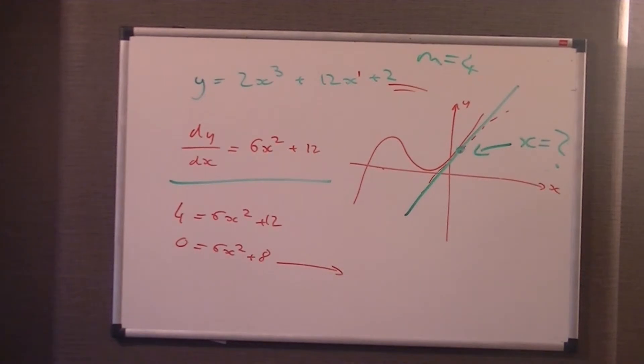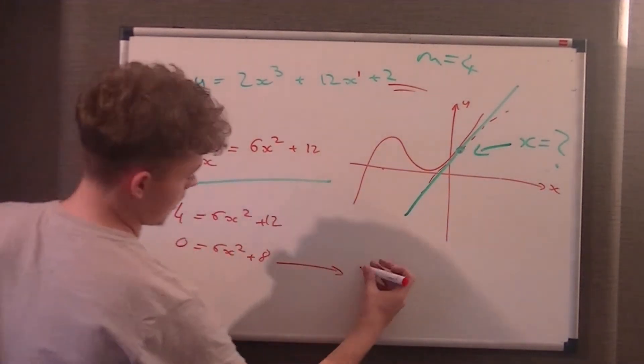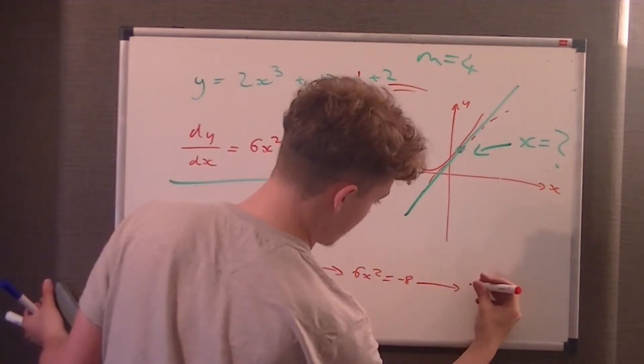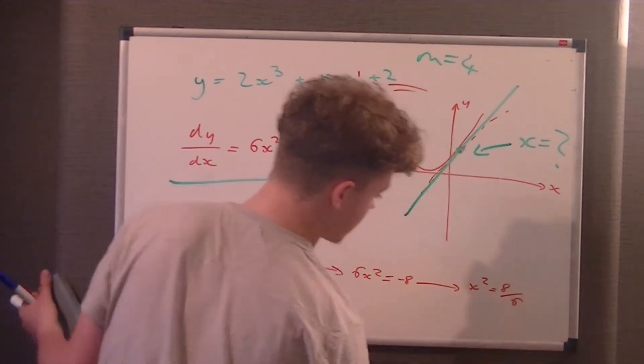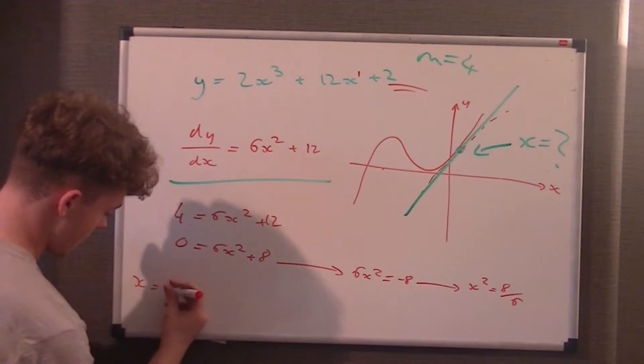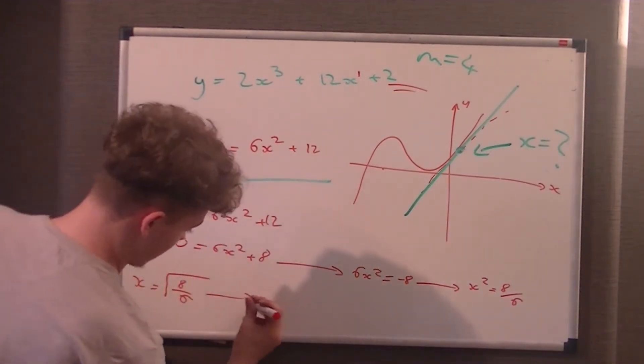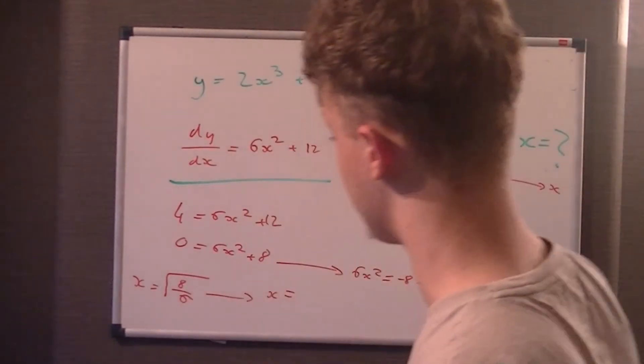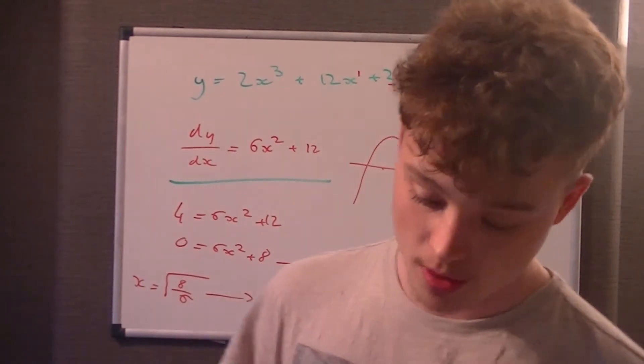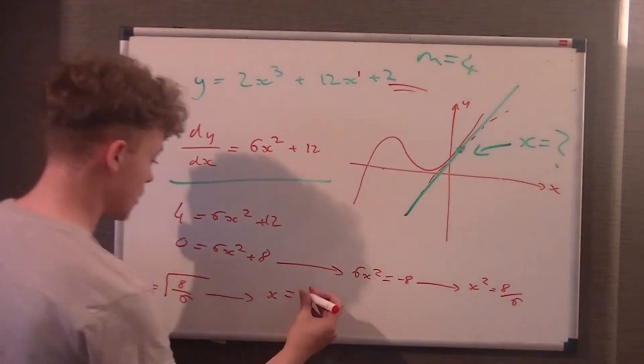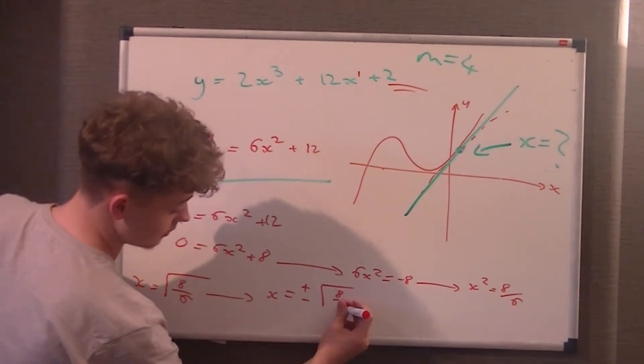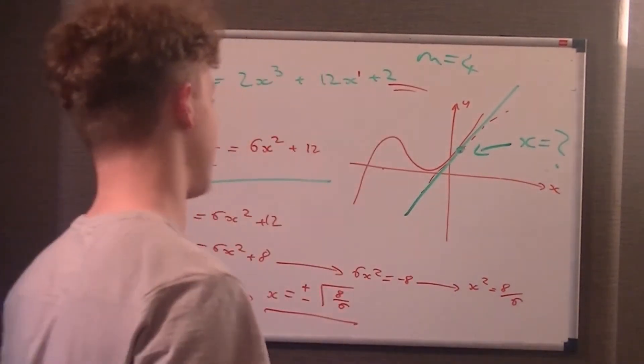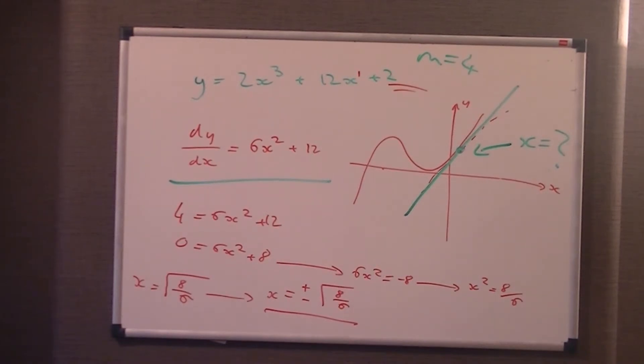If the gradient is 4, we say 6x squared equals minus 8, divide both sides by 6, so x squared equals 8 over 6. x equals the square root of 8 over 6. Obviously when you do this in the C1 exam, it's going to be much simpler, they'll do it at something you don't have to use a calculator for. But it's plus or minus the square root of 8 over 6, because the curve curves up and down, it could be on the right or left hand side.